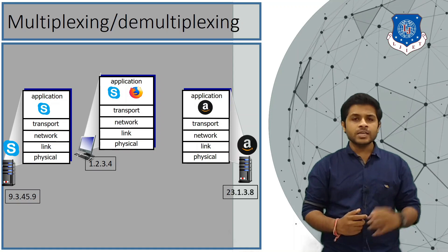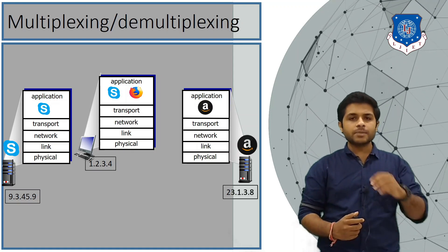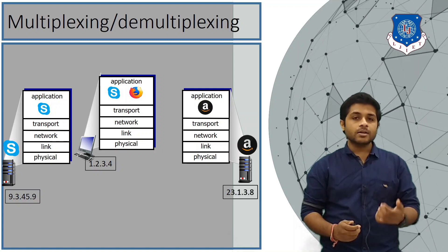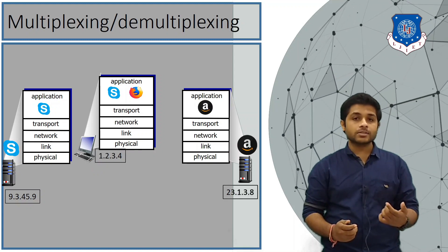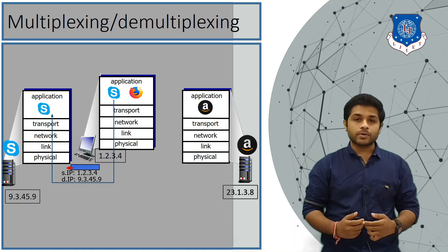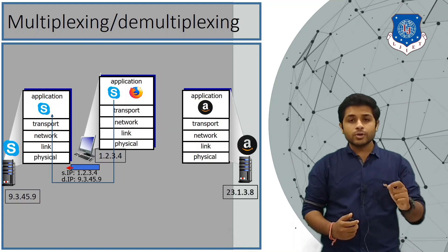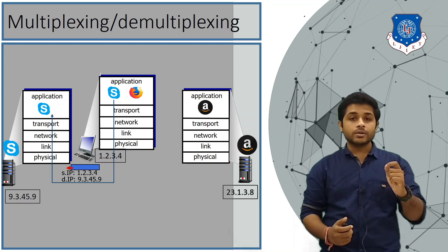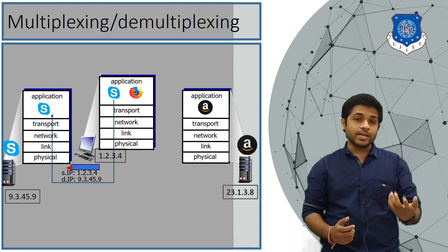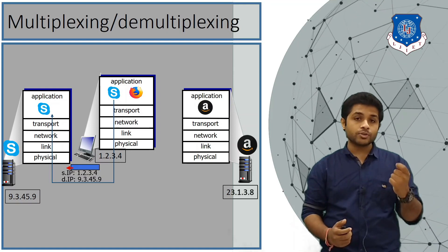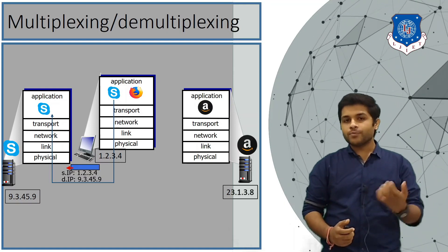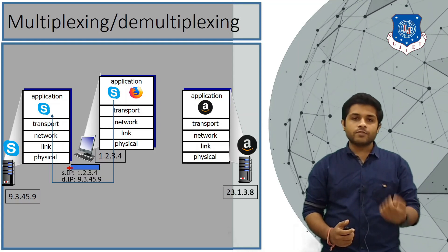Suppose you have typed a message and pressed Enter. The data will be passed from your computer to the Skype server. Notice that in the message, the source IP is 1.2.3.4 and the destination IP is 9.3.45.9 — so your computer knows the IP address of the Skype server.